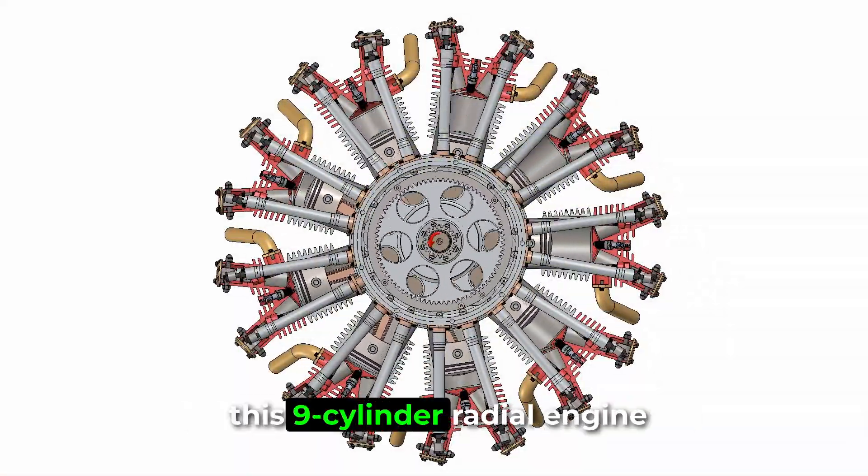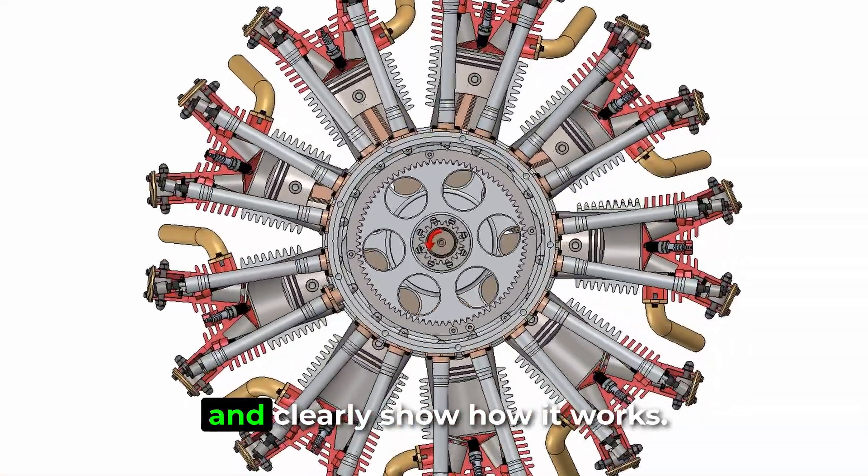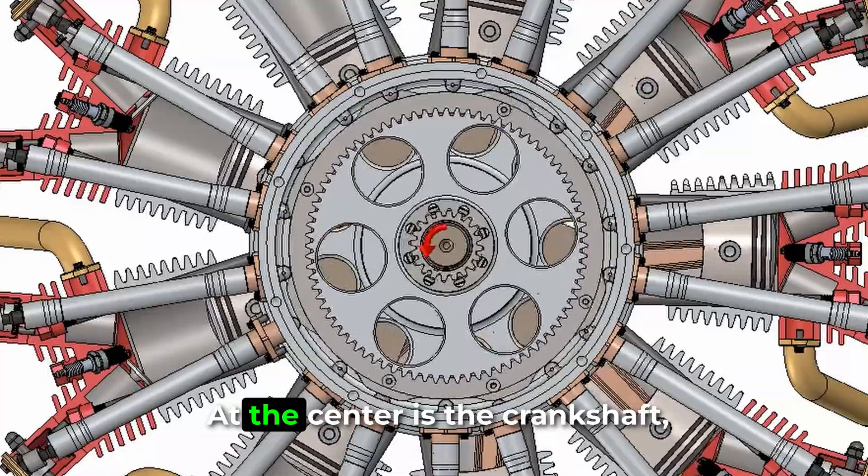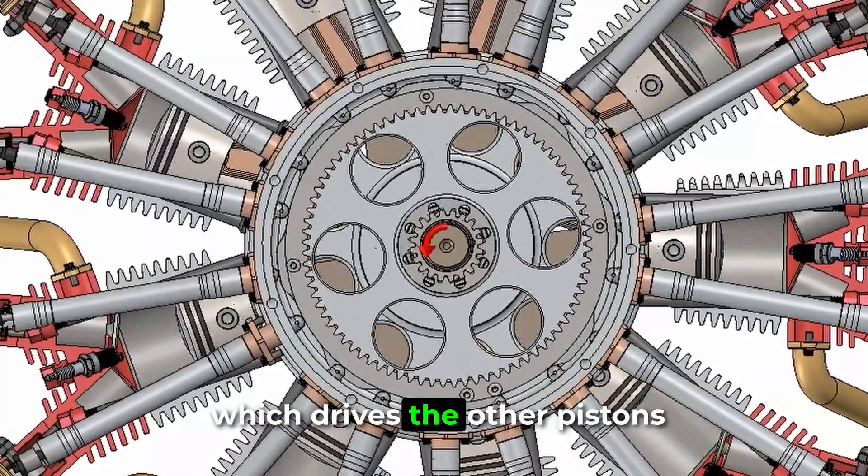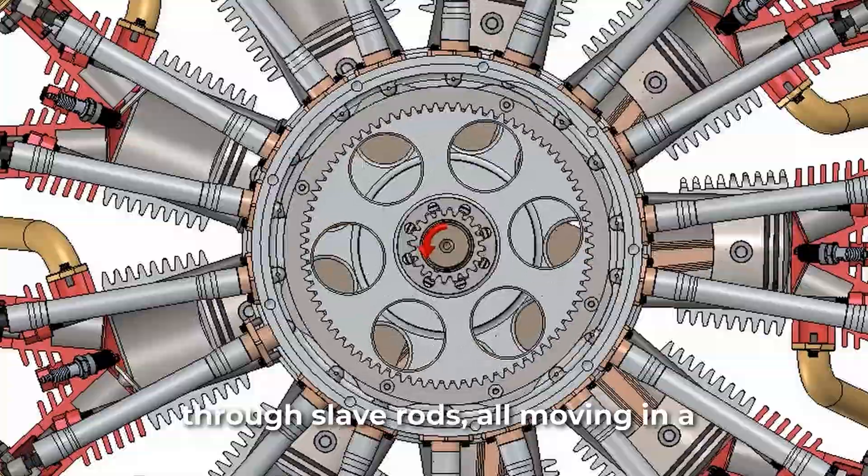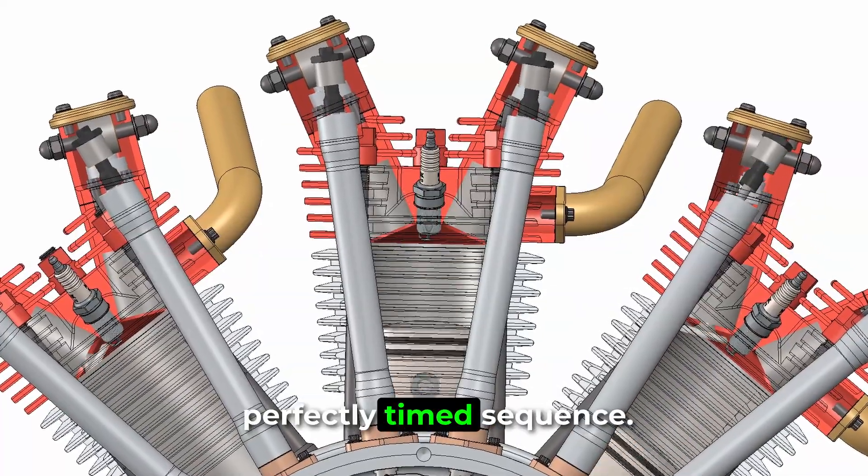We used SolidWorks to animate this nine-cylinder radial engine and clearly show how it works. At the center is the crankshaft, connected to a master rod, which drives the other pistons through slave rods, all moving in a perfectly timed sequence.